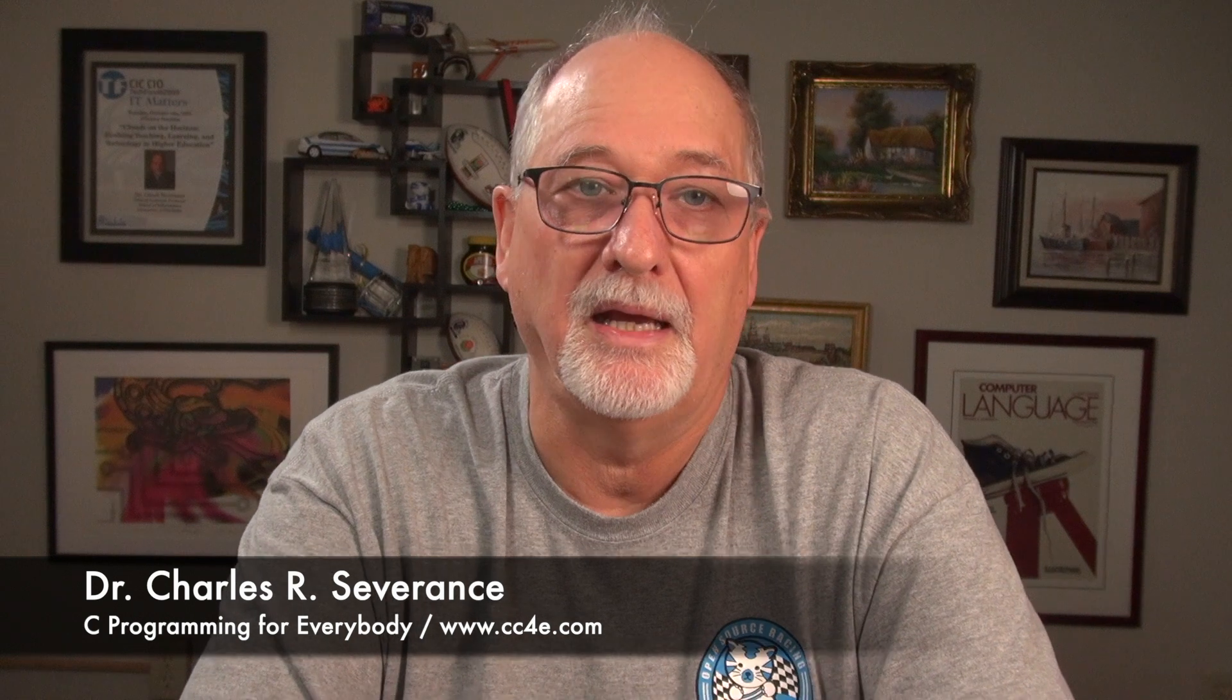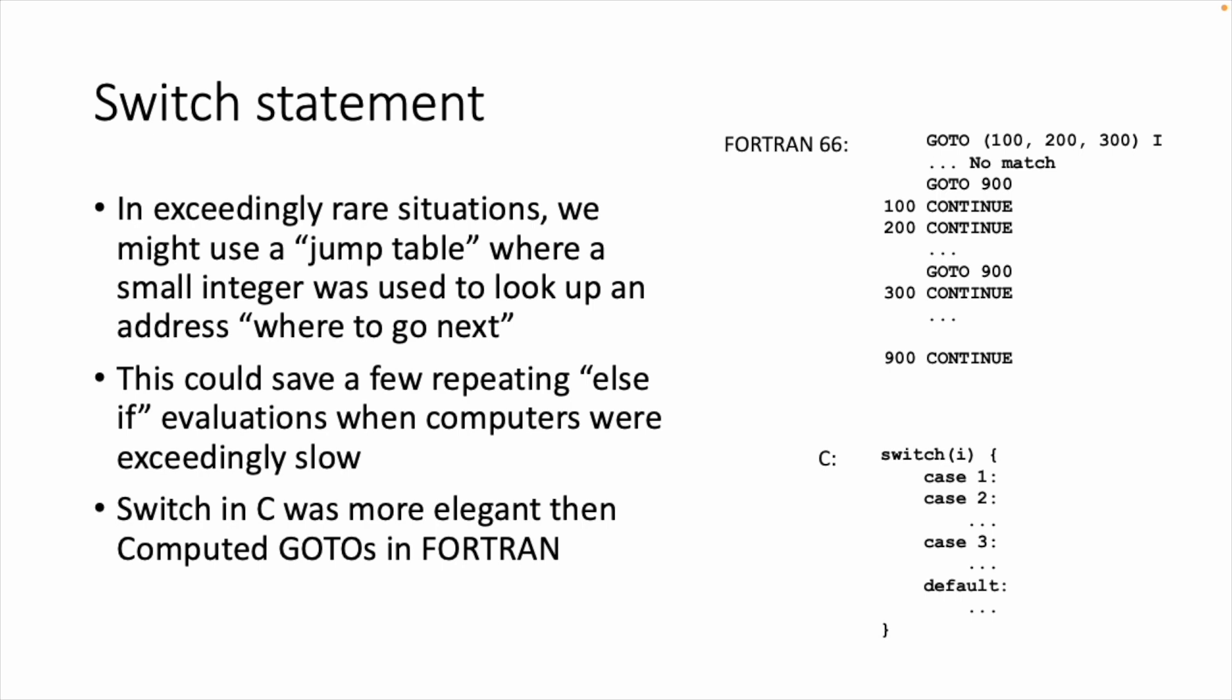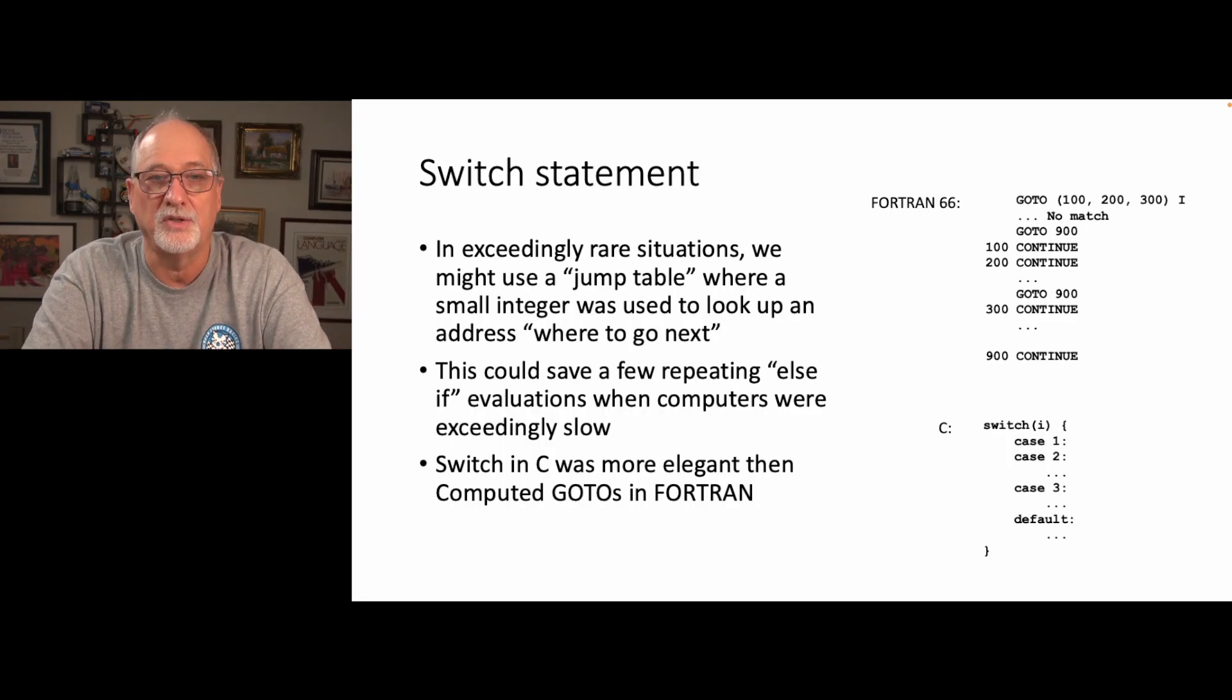Back then, a few extra statements might have bothered something if you're going to do it a million times. The switch statement is much prettier. You do have to put the break statements in there. You can kind of nest the stacked cases and then there's a default case. So if at least I compare the C switch statement with the Fortran computed go-to, I want to say that the C switch statement was pretty much a lot more elegant, a lot easier to use, a lot easier to understand.